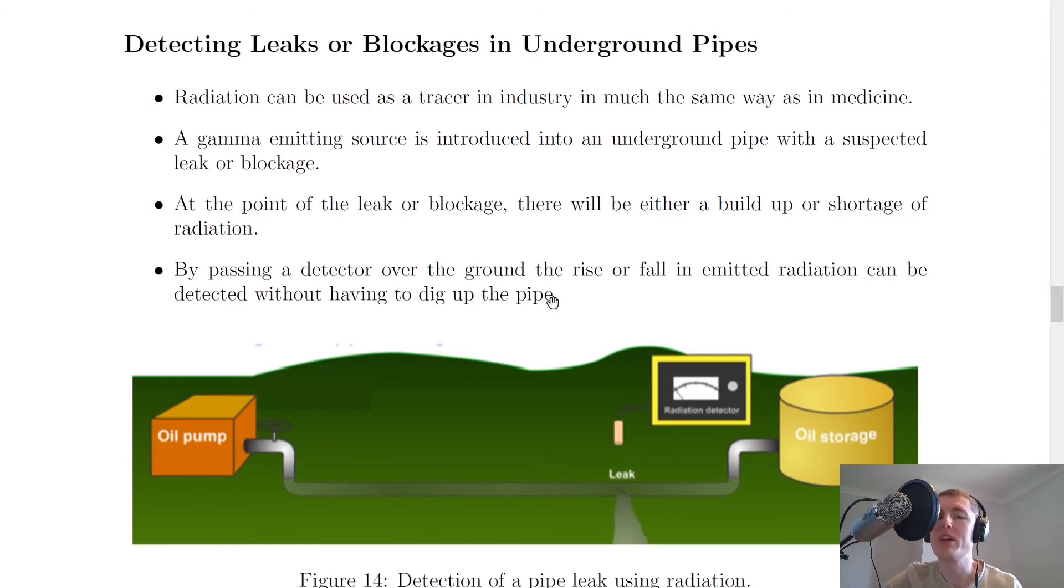By passing a detector over the ground, the rise or fall in emitted radiation can be detected without having to dig up the pipe. If you have a radiation detector, a Geiger-Muller tube, and pass it over the ground, then you should be able to detect either a drop in the radiation levels where there's been a leak or an increase in the radiation levels where there's been a build-up or a blockage. That way you can detect a blockage or a leak without having to physically dig up the pipe, and that's going to save you a lot of money.